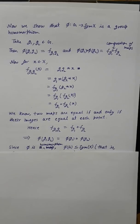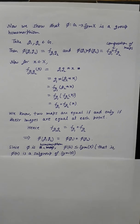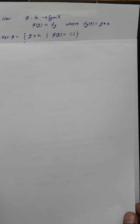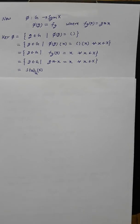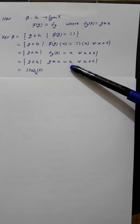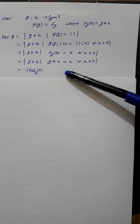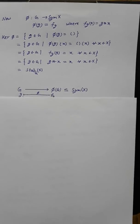Since φ is a homomorphism, the image φ(G) is a subgroup of Sym(X). We can also determine the kernel of φ: the kernel is the collection of those g in G such that φ(g) is the identity, meaning fg(x) = x for all x in X, i.e., g ★ x = x for all x in X. But this is precisely the stabilizer of the action.